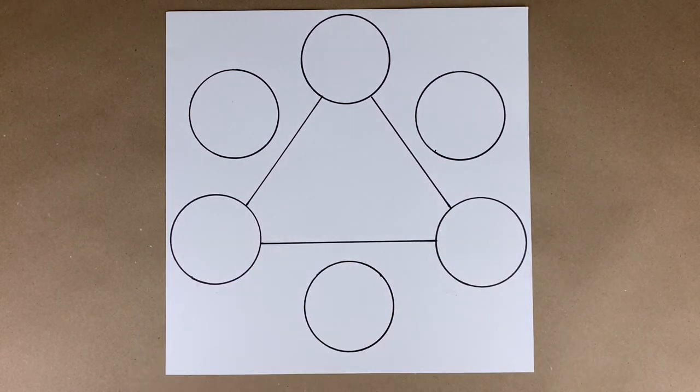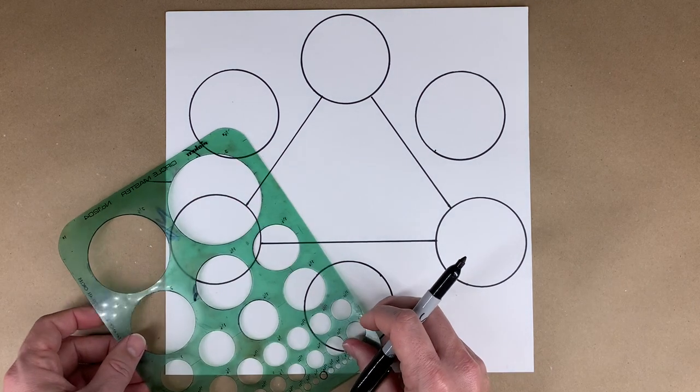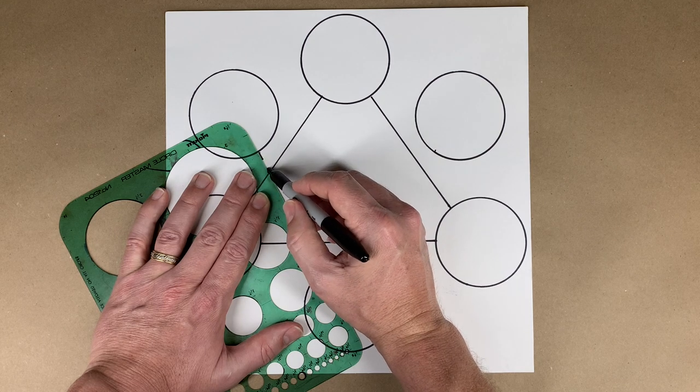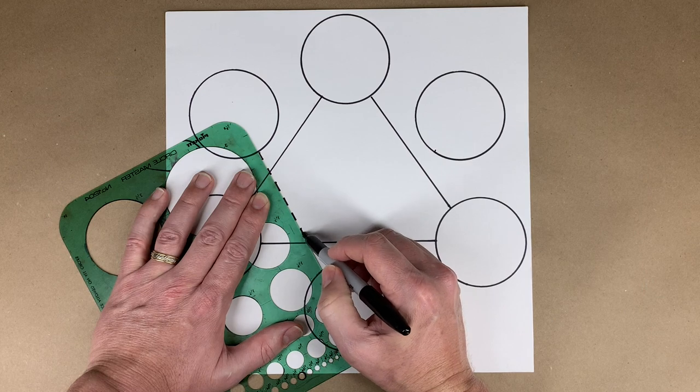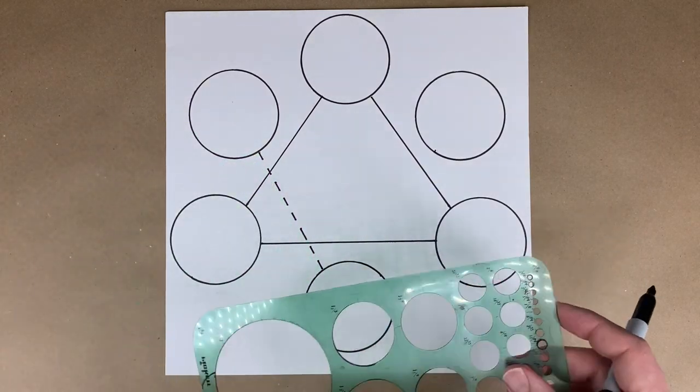Now we're going to connect these three circles with a dashed line or a dotted line. So you're going to pick up your pencil or marker every so often and make a dotted dashed line like this. That's to show that they are the secondary colors.